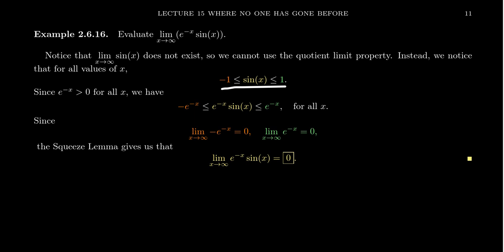we can times everything by e to the negative x. Because every exponential expression that is e to any power will always be positive. And if you multiply inequality by a positive quantity, that doesn't change the inequalities.